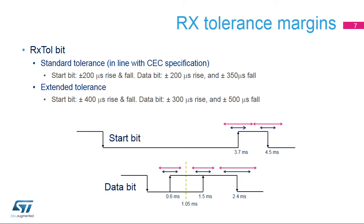The HDMI CEC controller supports two RX tolerance margin modes. First, a standard tolerance mode in line with CEC specifications: plus or minus 200 microseconds on start bit rise and fall time, and plus or minus 200 microseconds on the rising edge of a data bit, and plus or minus 350 microseconds on the falling edge of a data bit.